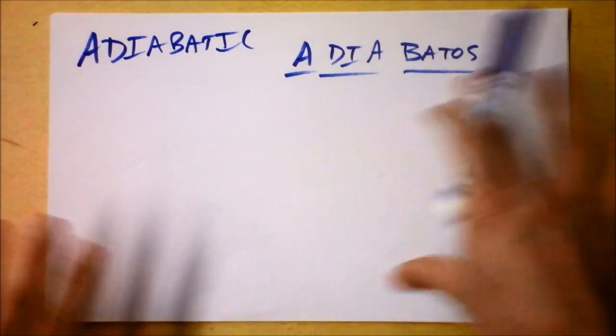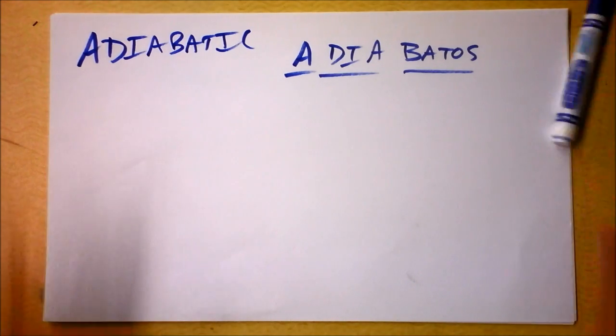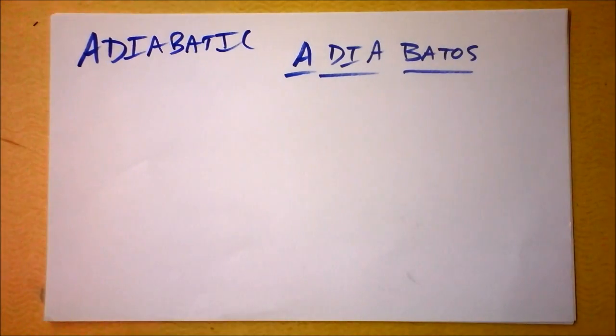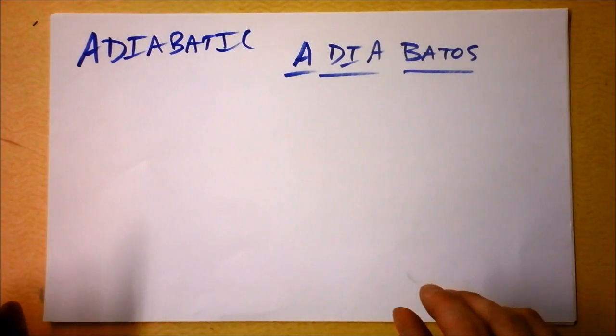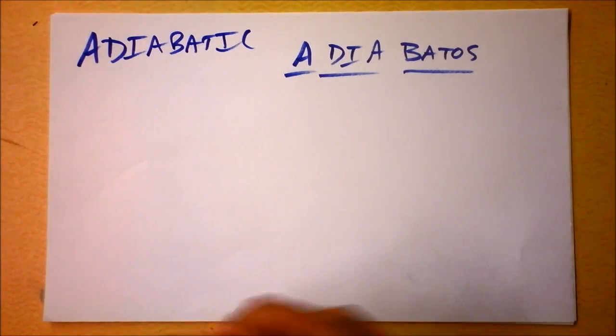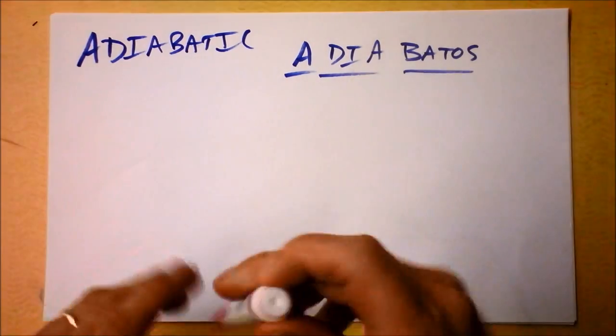Something adiabatic means something's not getting through. In physics, an adiabatic thermal process is one in which no heat can flow into my system.